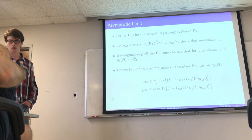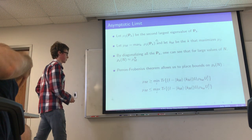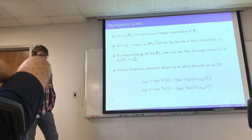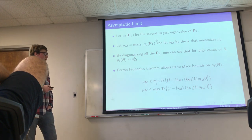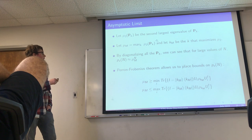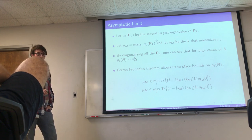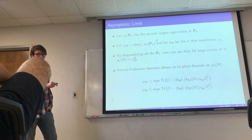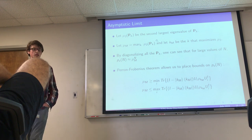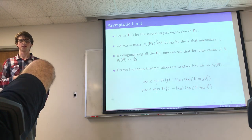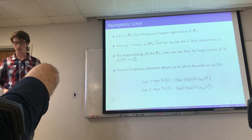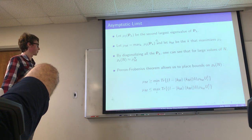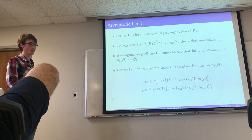An interesting question is the asymptotic behavior of the circuit, which commonly arises in state discrimination analysis. The basic outline of the argument: calculate the second largest eigenvalues of all the transition matrices, and let μ_M be the largest of all those second largest eigenvalues. Using some linear algebra, the probability of error given N copies is approximately μ_M^N. The Perron-Frobenius theorem then places a bound on μ_M.